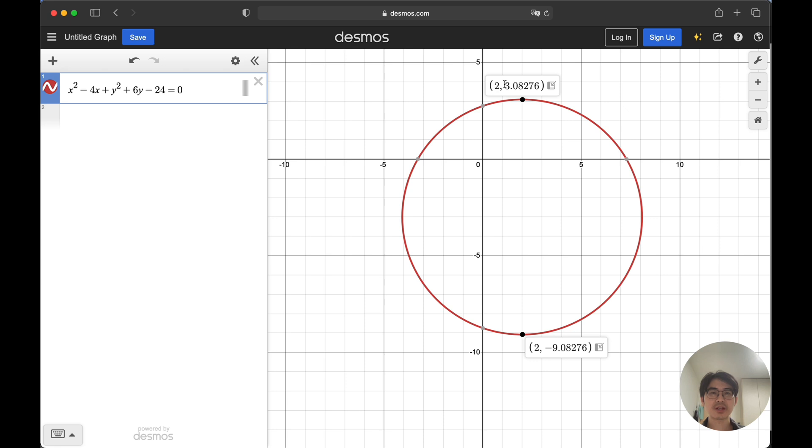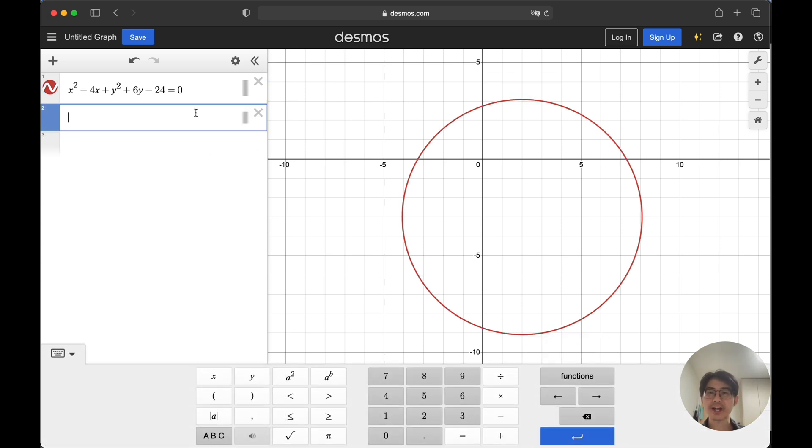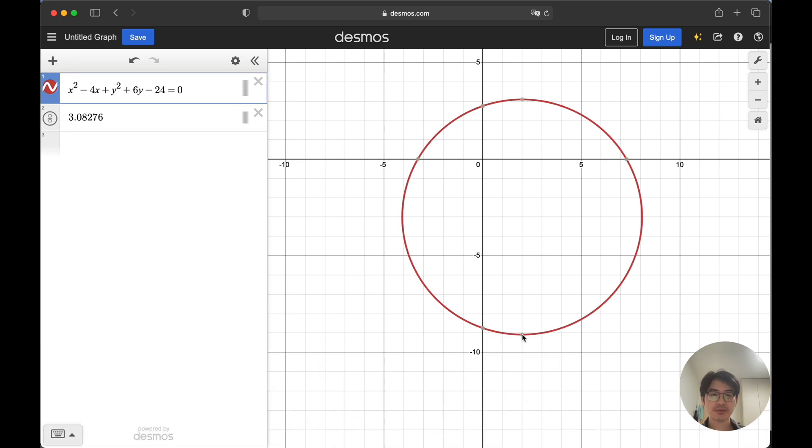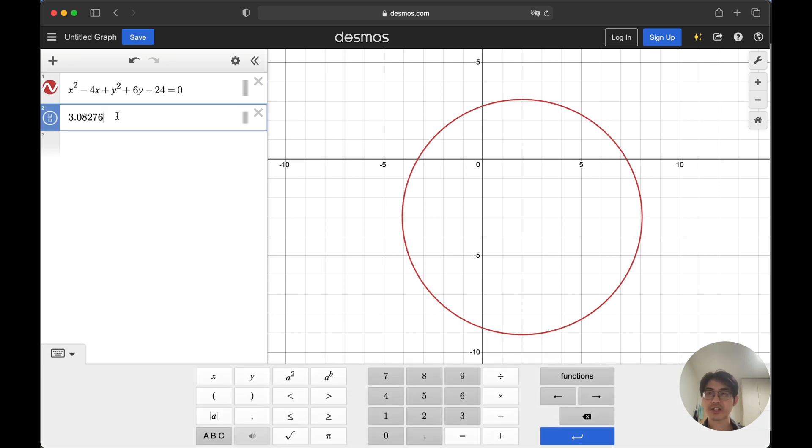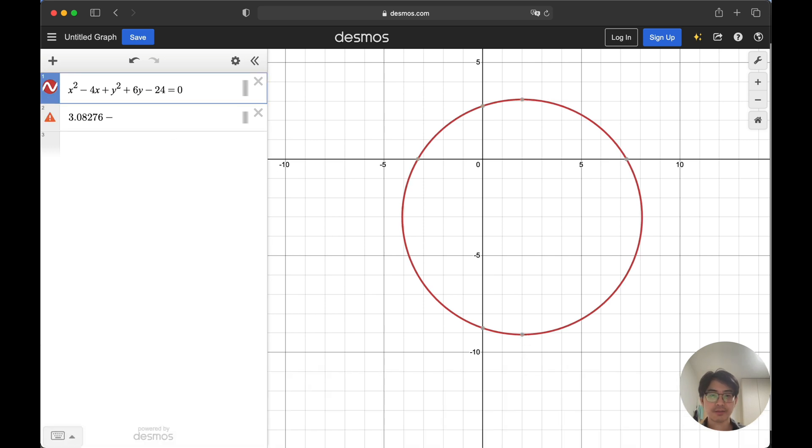All we need to do is copy these two Y values of the highest point and lowest point. Subtract the Y value from the highest point by the Y value of the lowest point. Let's see what we can get.